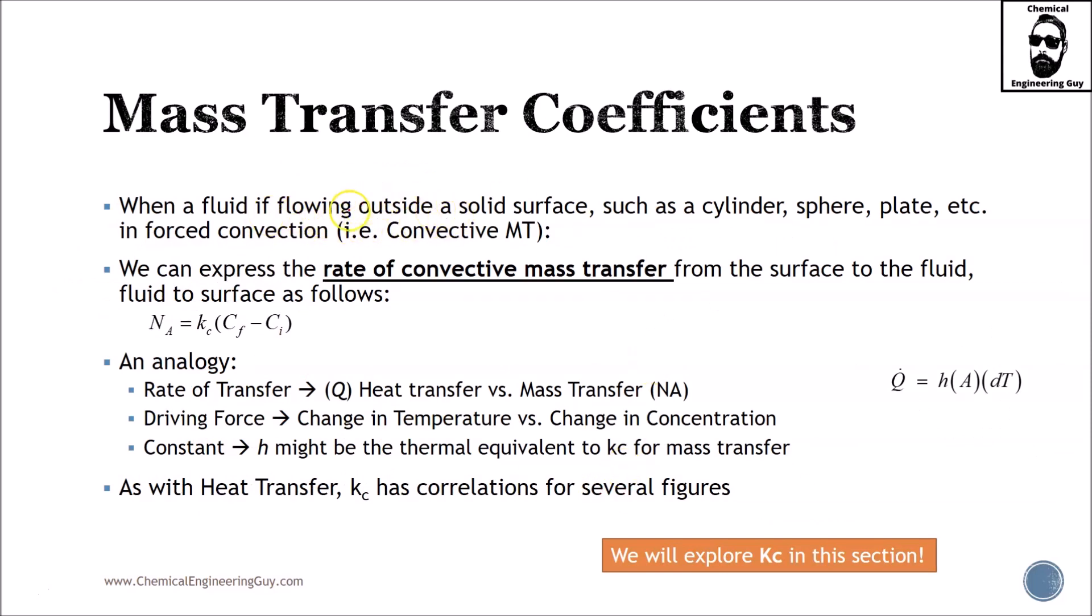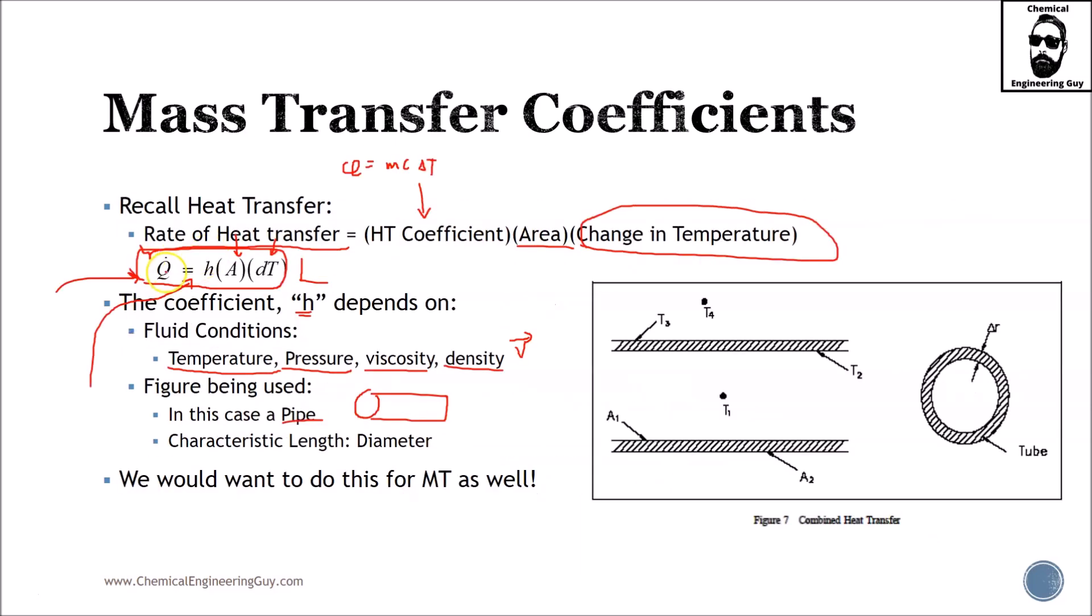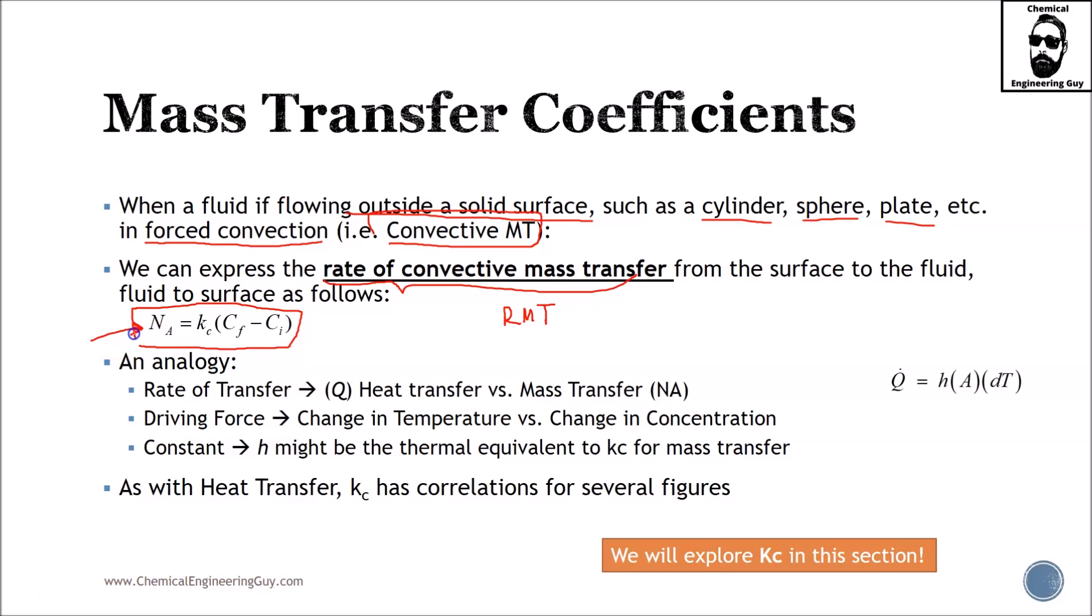When a fluid is flowing outside a solid surface such as a cylinder, sphere, plate, pipe, whatever you can imagine, we are going to be talking about forced convection. If we talk about forced convection, this is convective mass transfer. We can express the rate of convective mass transfer, or technically speaking from now on, the rate of mass transfer from the surface to the liquid or fluid, as follows.